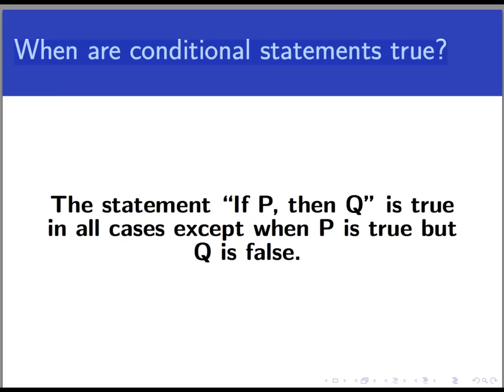that is, something of the form if P, then Q, is true in every circumstance except one. That is when P is true, but Q is false.